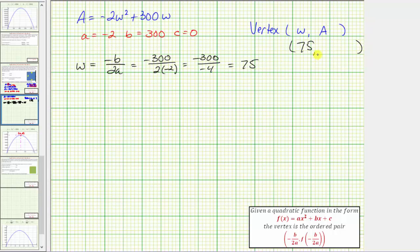And now to find the a-coordinate, or the maximum area, we need to substitute w equals 75 into our area equation. So let's say a of 75 is equal to negative 2 times 75 squared plus 300 times 75.